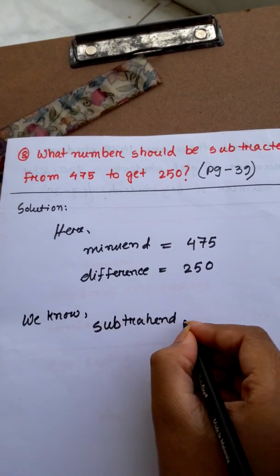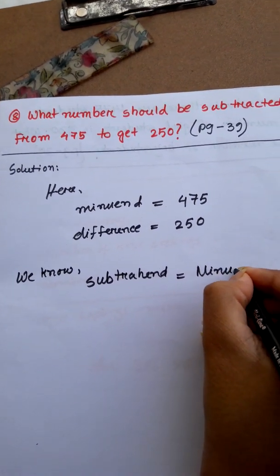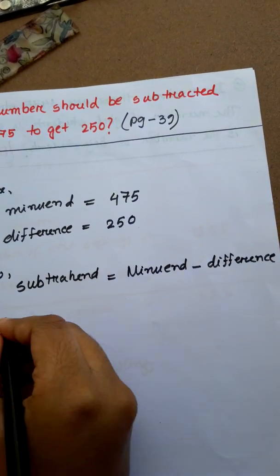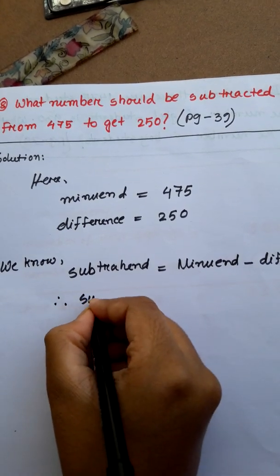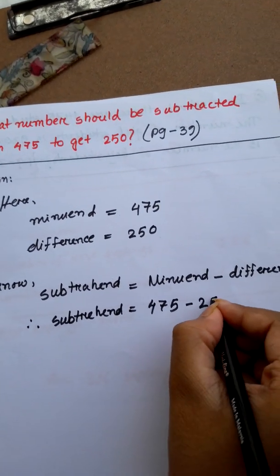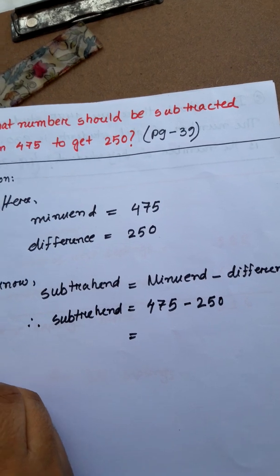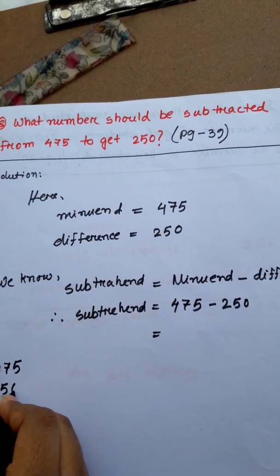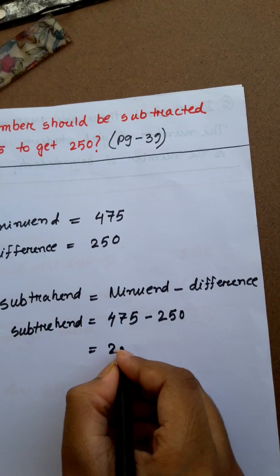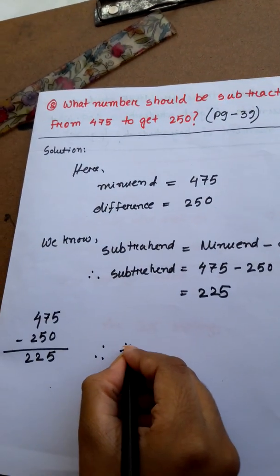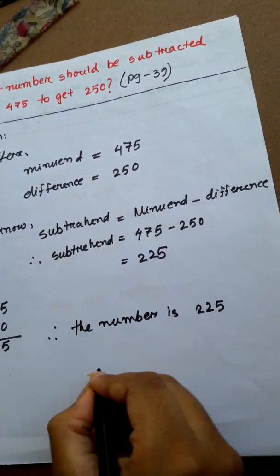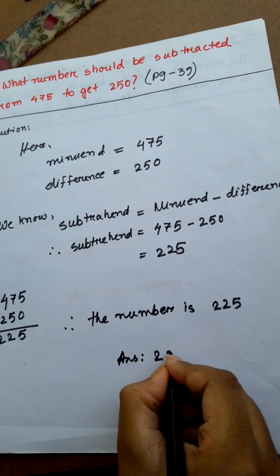We know subtrahend is equal to minuend minus difference. Therefore subtrahend is equal to 475 minus 250. 5-0, 5, 7-5, 2, 4-2, 2. Therefore the number is 225. Answer: 225.